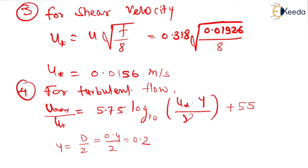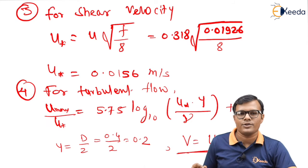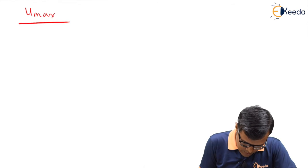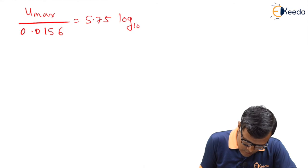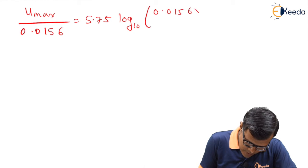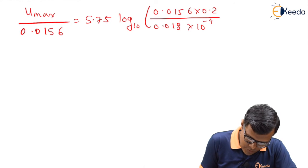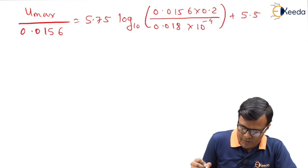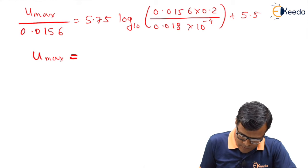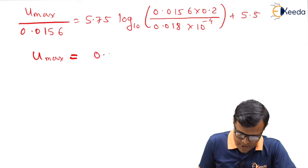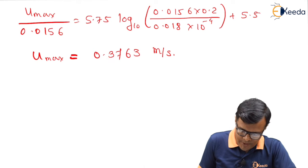And now this is at the center line. Hence we can calculate V equals umax. This is the basic relation for the boundary conditions. Putting all these values into the equation, we can have umax upon 0.0156 equals 5.75 log₁₀(0.0156 × 0.2 divided by 0.018 × 10⁻⁴) plus remaining term is 5.5. We can find value of umax by solving the corresponding equation. The final value after calculation is 0.3763 meters per second.